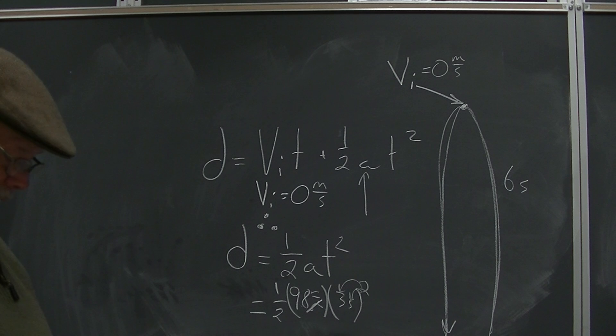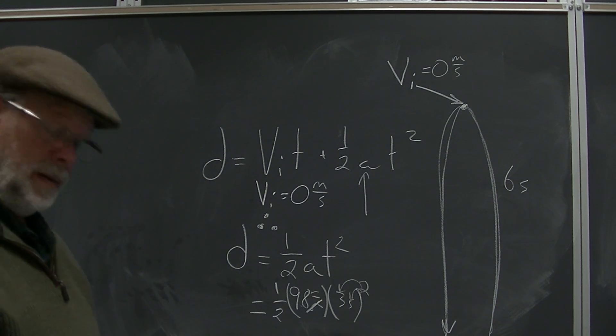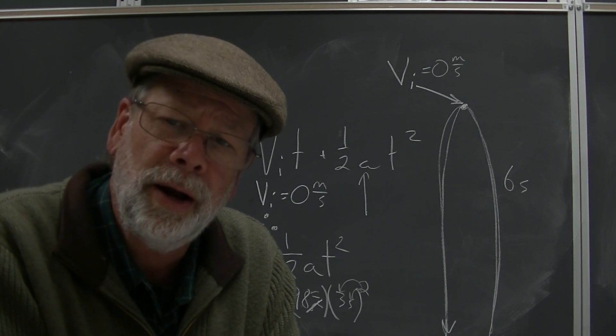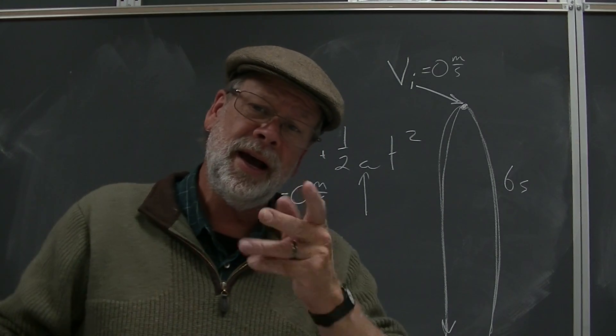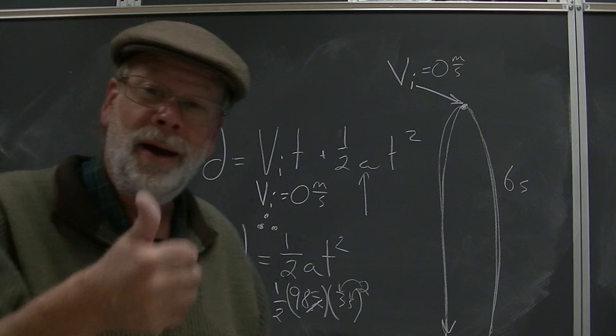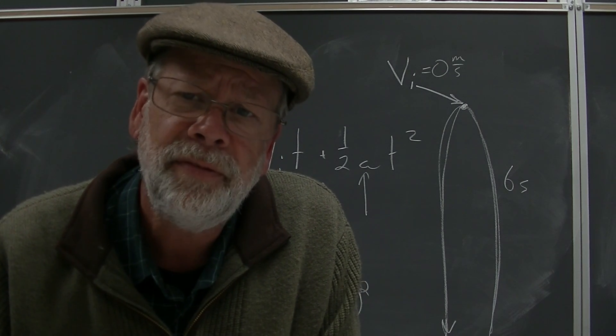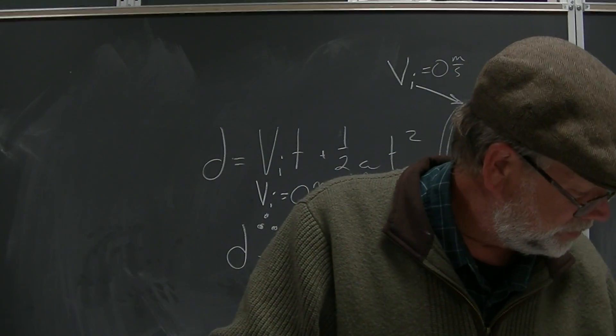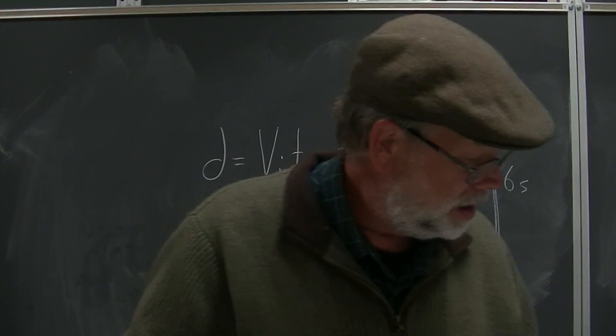0.5 times 9.8 times 3 squared, that 3: 44.1. Does that jive with how far an object falls in three seconds? Starts at zero, ends at 30, averages 15 for three seconds. That's 45. 44.1, I think we got ourselves something here. It works! The formula D equals VIT plus one half AT squared, that's one of the better formulas we have. So that is the one to remember.